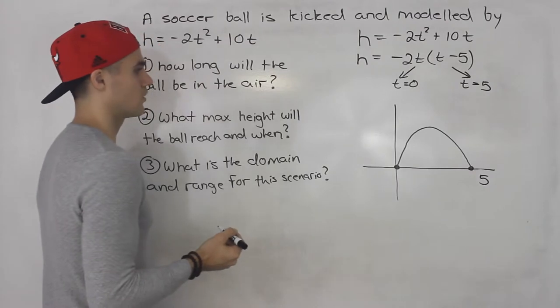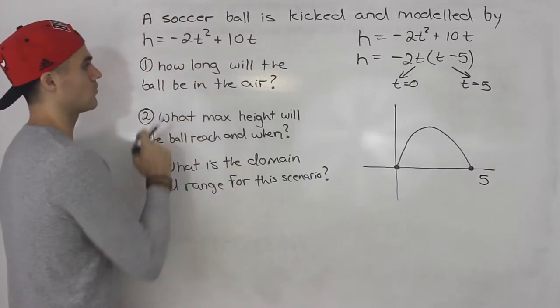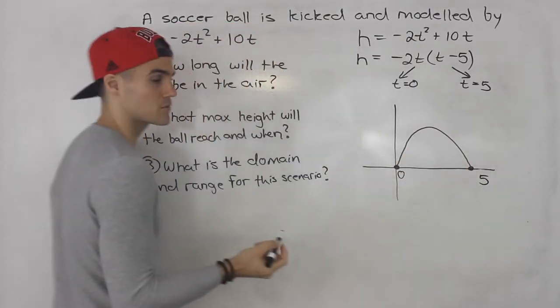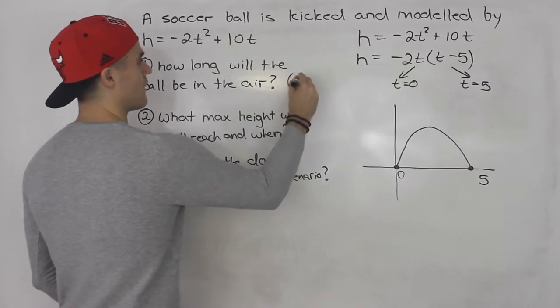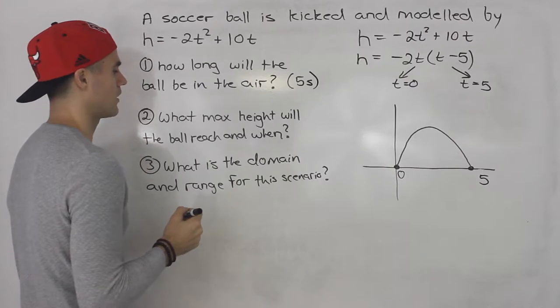So this soccer ball is kicked from here and lands on the ground at 5 seconds. So from here, we can already answer a bunch of questions. Number one, how long will the ball be in the air? Well, from 0 seconds to 5 seconds. That's when it's going to hit the ground. So 5 seconds is the answer for number one.